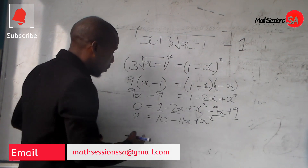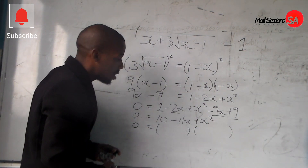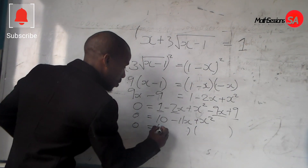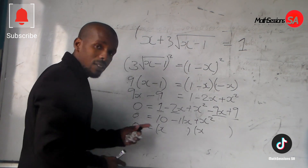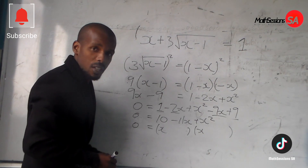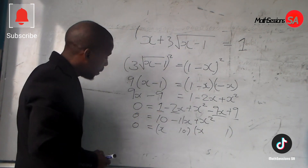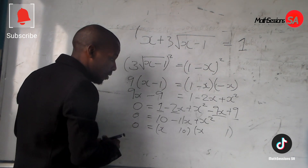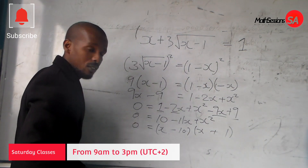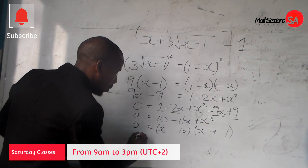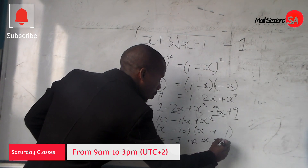Here is our equation. We factorize the trinomial: we are having x squared, negative 11x, and 10. So we write x times x. We look for two numbers that when multiplied give 10, but when added or subtracted give negative 11. In this case we are having 10 and 1, because 10 times 1 is 10. When you make 10 take the sign of the middle term — negative 10 and positive 1 — they add to negative 11. Therefore, x is equal to negative 1, or x is equal to positive 10.